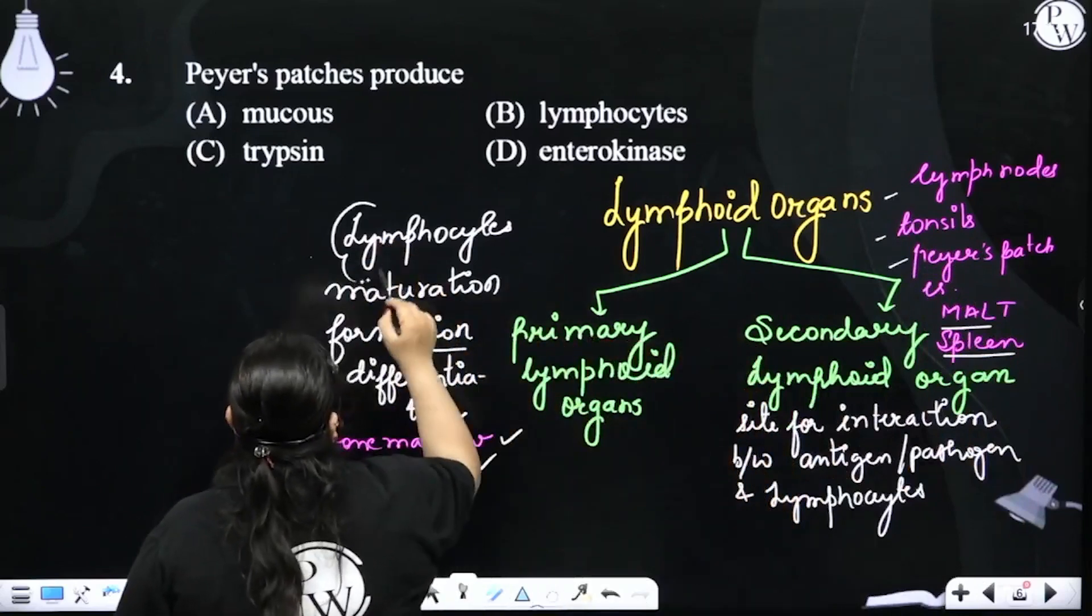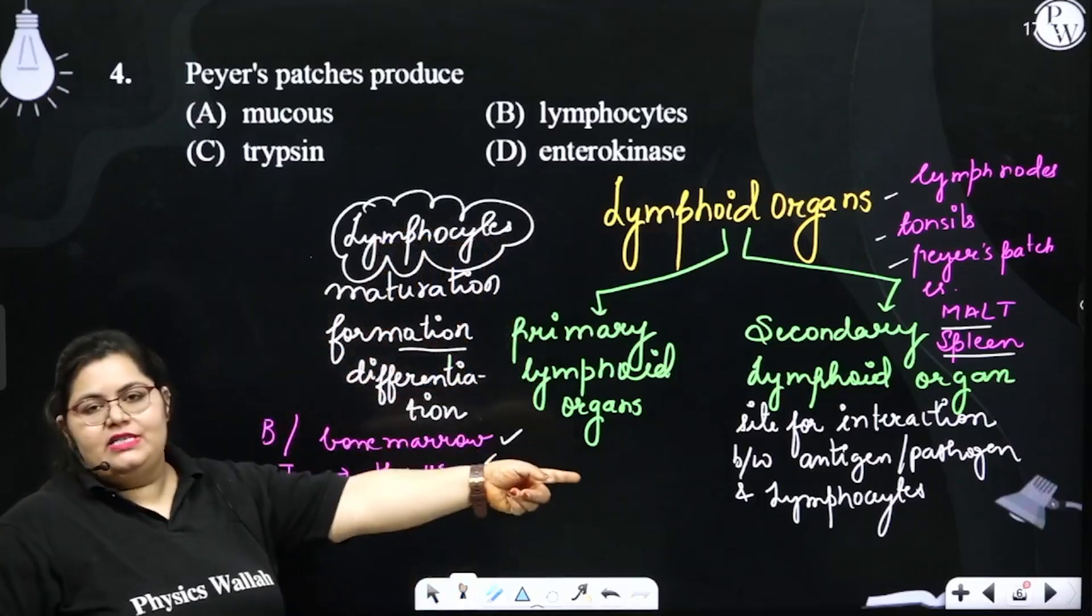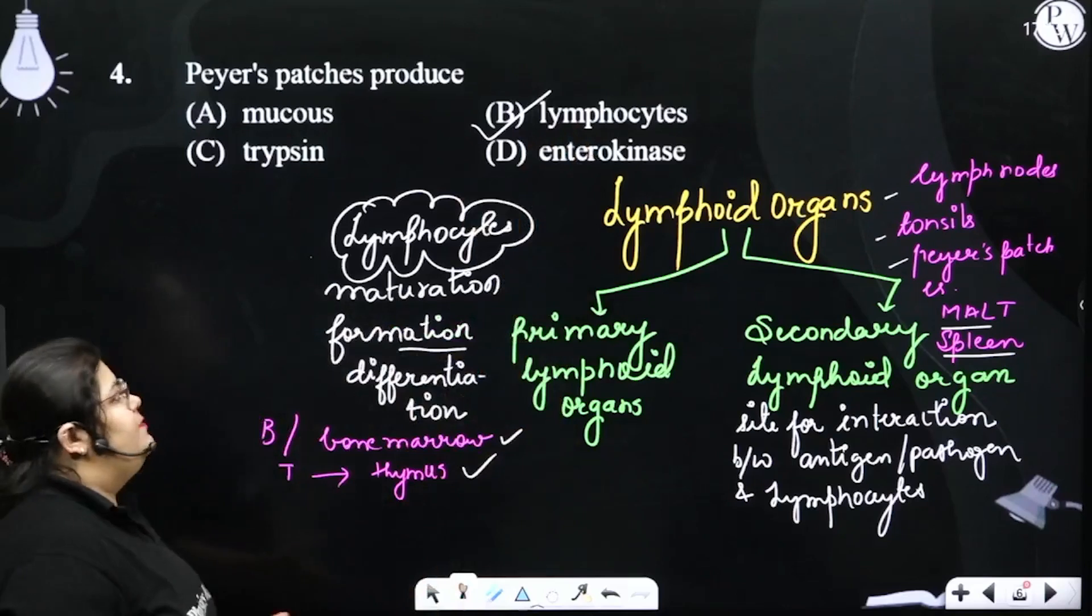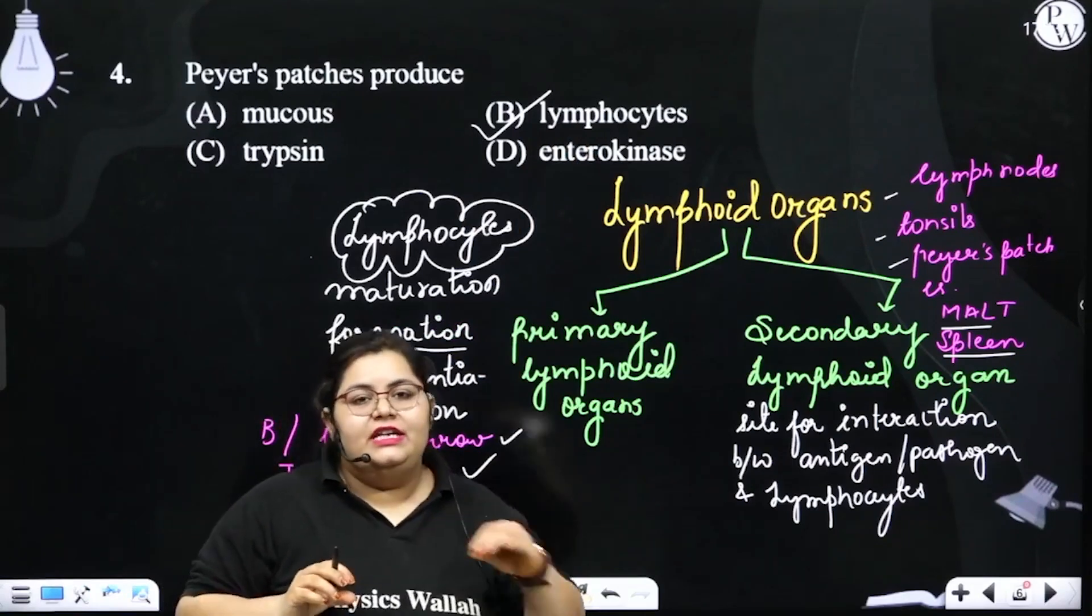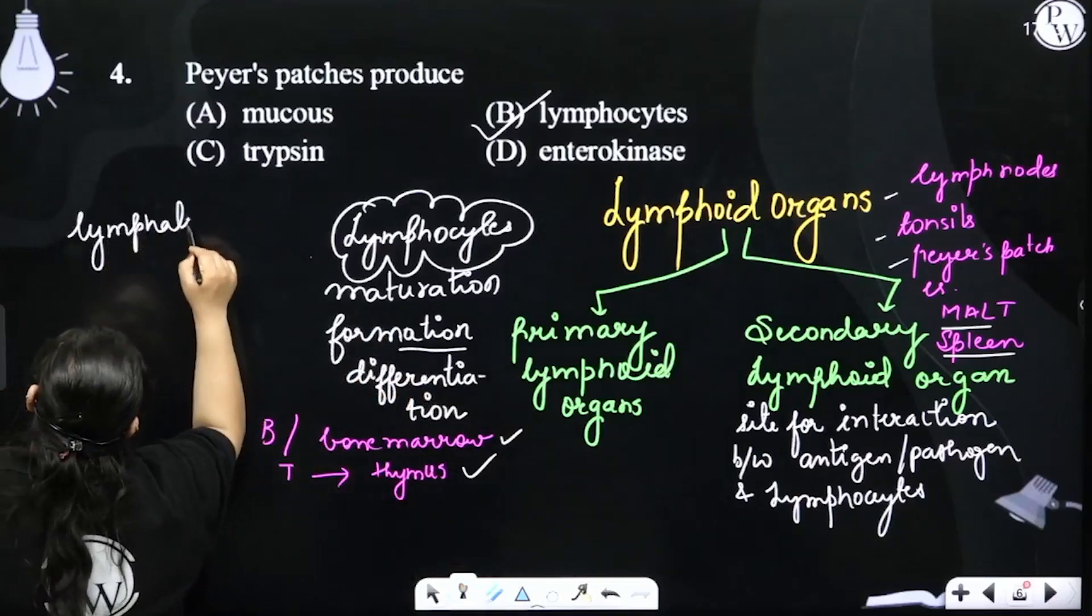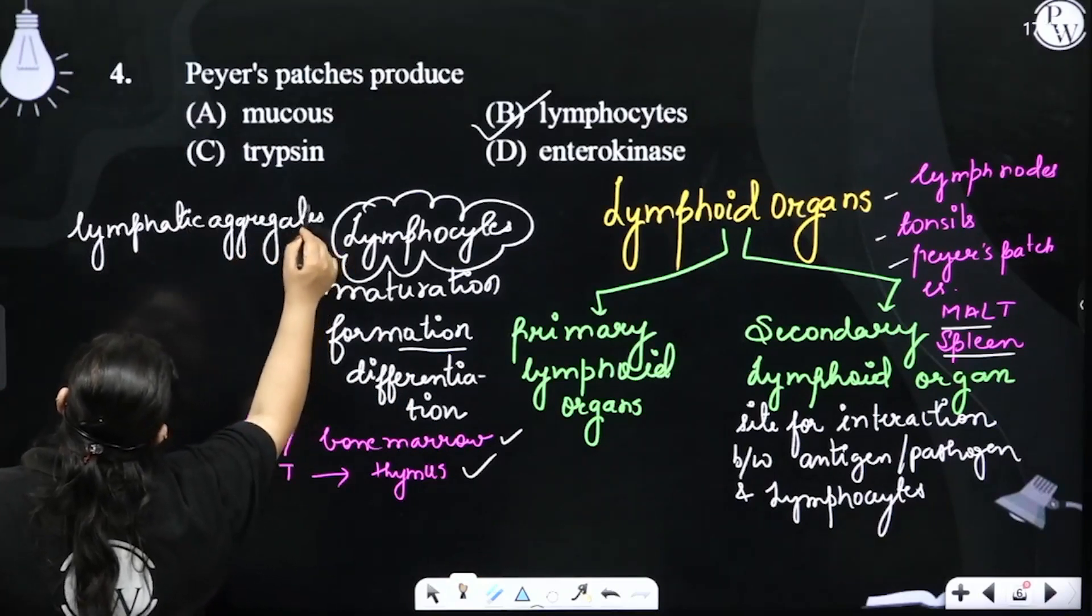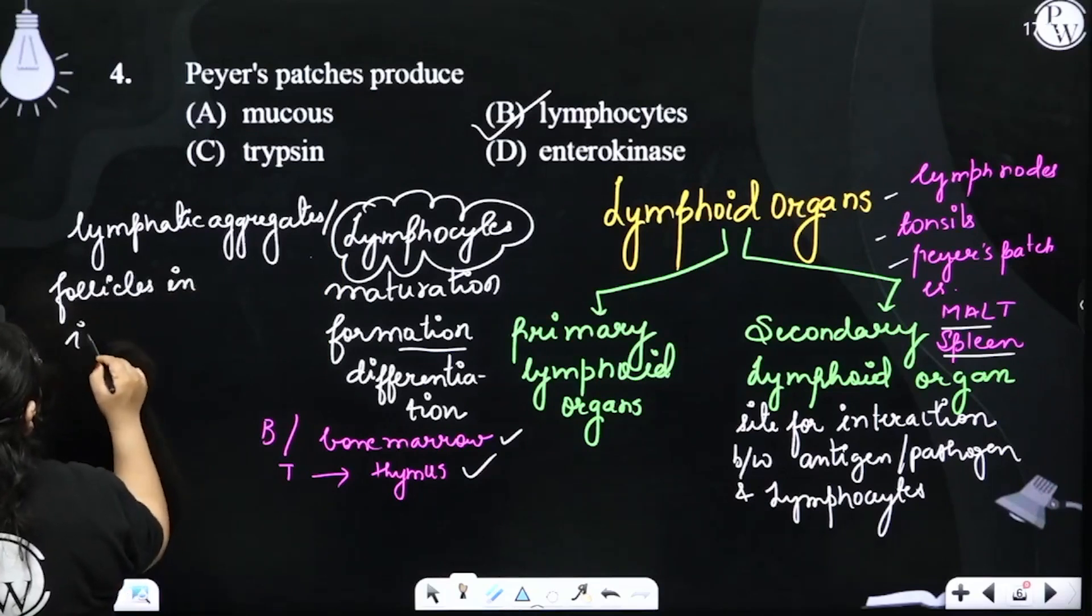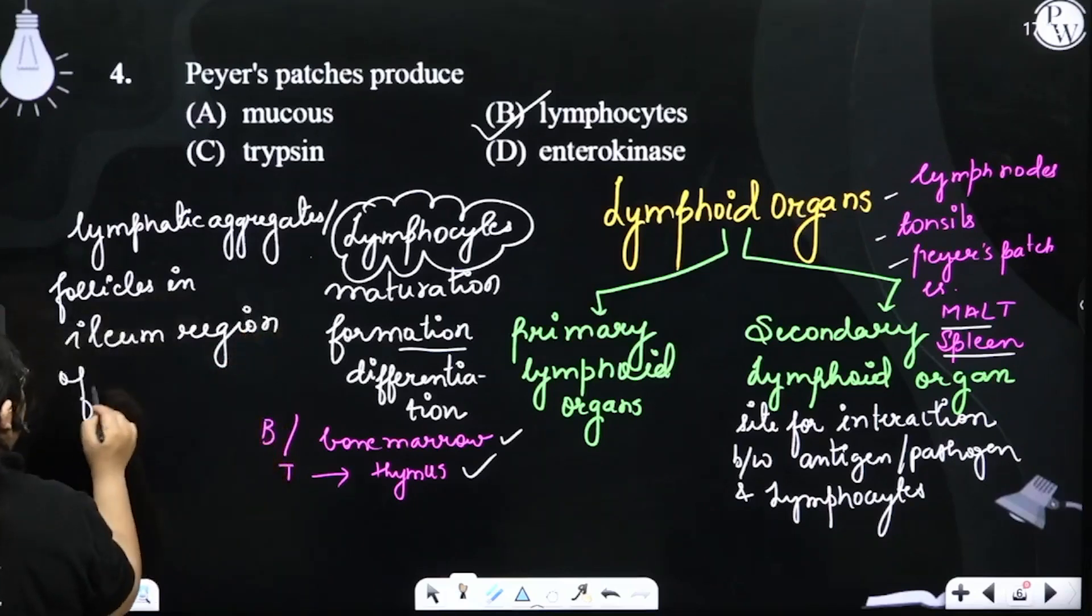Lymphocytes-related maturation or production is involved in lymphoid organs, and Peyer's patches is one of the secondary lymphoid organs. So clearly it produces, it is related with the lymphocytes. Where are the Peyer's patches? They are actually lymphatic aggregates or follicles in the ileum region of the small intestine.